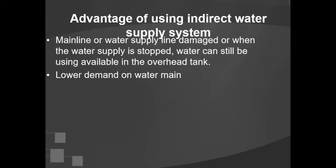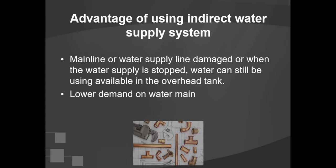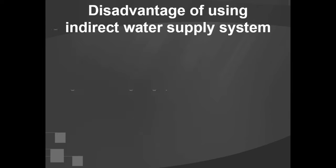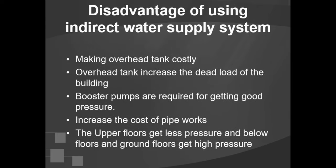The indirect water supply system has some advantages. When the main water supply line is damaged or water supply is stopped, water can still be used from the overhead tank. It also results in lower demand on the water main. Disadvantages include the overhead tank being costly to construct, booster pumps being required for good pressure, increased cost of pipe works, and upper floors receiving lower water pressure compared to ground floors.